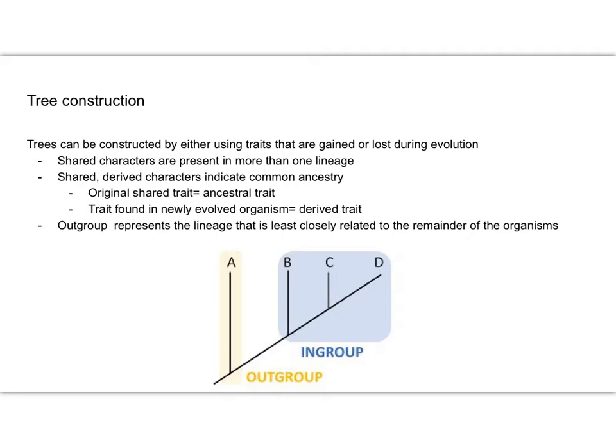Shared and derived characters indicate common ancestry. So these are going to show that there is a common ancestor somewhere along the path. The original shared trait is the same as the ancestral trait. These two terms can be used interchangeably when you're given information about how to build the tree. The trait that is found in the newly evolved organism—the newest, most recent organism—that is considered our derived trait.